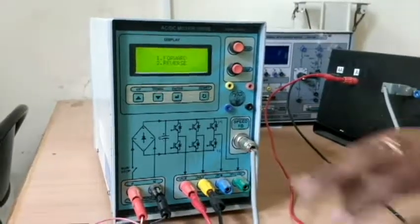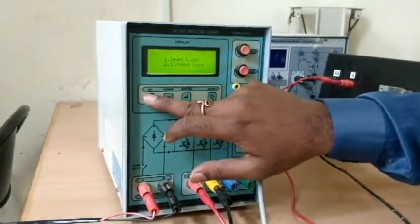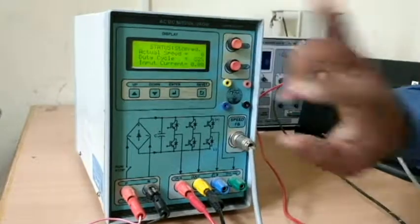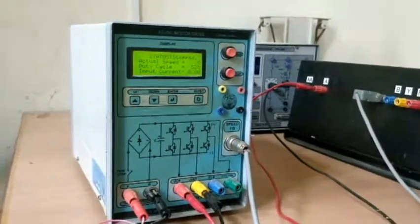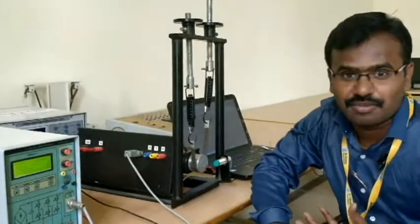Now it asks for forward or reverse. We are giving forward, then enter. Now I will demonstrate open loop. The actual speed is now displayed. We can't set speed but it can display the actual speed.